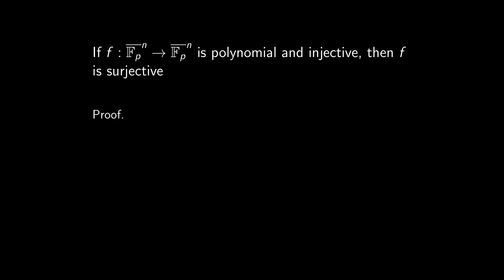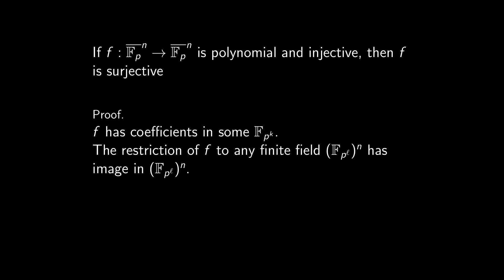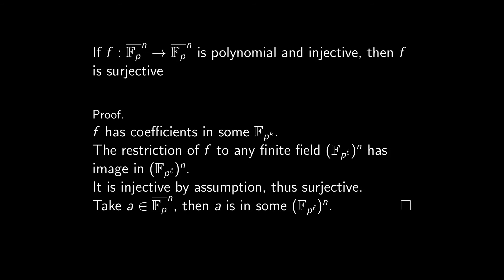And we'll prove it. First of all, f has coefficients in F_p bar, which is the union of all F_p^k, so actually, f has coefficients in some F_p^k. Now, the restriction of f to F_p^l to the n, provided l is bigger than k, has image in F_p^l to the n. f is injective, by assumption, and since we restricted it to a finite set, it must be surjective, from F_p^l to the n to itself. Now if you take any point in F_p bar to the n, it must lie in some F_p^l to the n. So we know f will reach it at some point. Feel free to take a break and review this step of the proof for yourself.